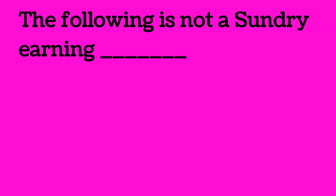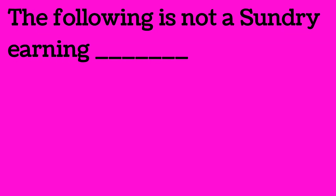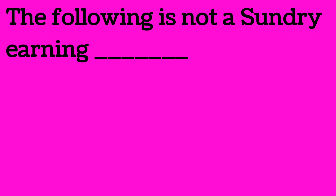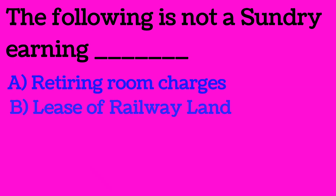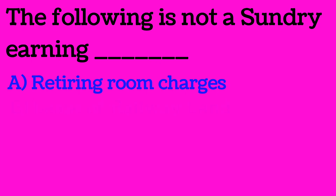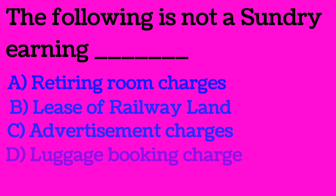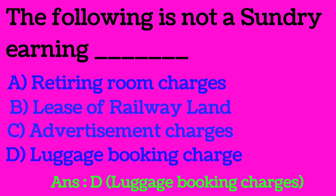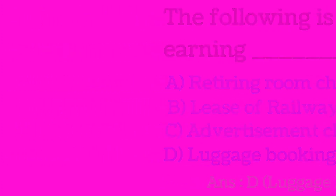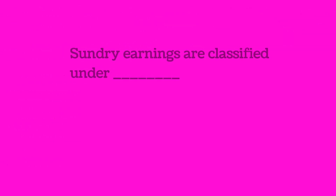Which of the following is NOT a sundry earning? Option A is retiring room charges, Option B is lease of railway land, Option C is advertisement charges, and Option D is luggage booking charges. The answer is Option D — luggage booking charges — because it is a coaching earning, not a sundry earning. Retiring room charges, lease of railway land, and advertisement charges are all sundry earnings.